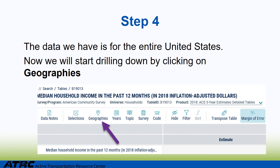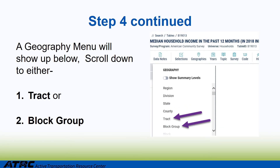Step 4: The data we have is for the entire United States. We are now going to start drilling down by clicking on 'Geographies,' indicated with the purple arrow below. A geography menu will show up. Scroll down to either 'tract' or 'block group' depending on which data set you will be using for your application.